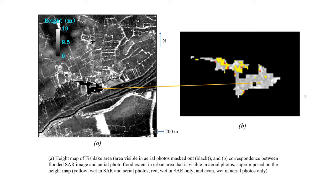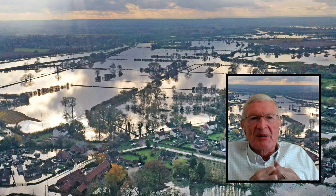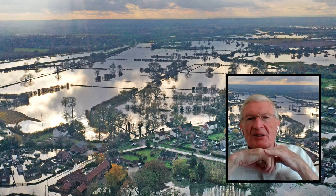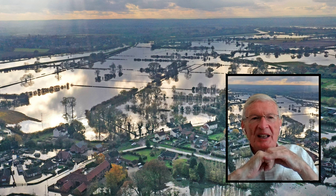Yellow is wet in both the SAR and the aerial photos; red is wet in the SAR only. The flood detection rate was 100%, with a false alarm rate of 8%. The method has worked well in this example, though the accuracy does fall off when you have denser housing. We'd like to test the method in developing countries, rather than simply in the UK.